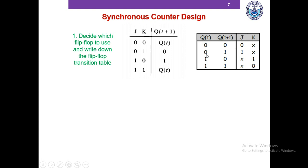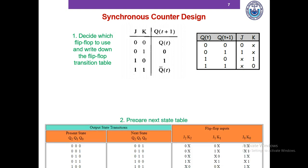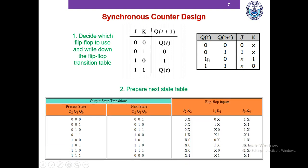The next step is to use the transition table to determine the next state table. This is an example of a next state table for our 3-bit up counter.